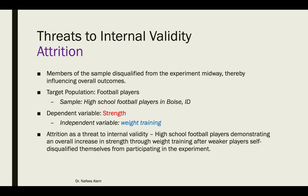Last is attrition as a threat to internal validity, where members of the sample are disqualified from the experiment midway, thereby influencing overall outcomes. The target population is football players; the sample is high school football players in Boise, Idaho; the dependent variable is strength; the independent variable is weight training. Attrition as a threat would be where players demonstrate an overall increase in strength through weight training only after weaker players self-disqualify from the experiment. Obviously, if only stronger players are participating, it will appear as though the experiment is effective — but we must account for the entirety of the sample.